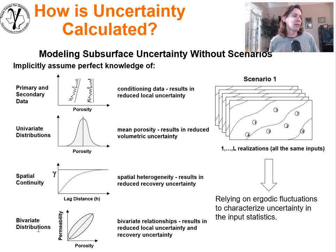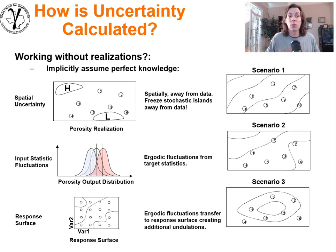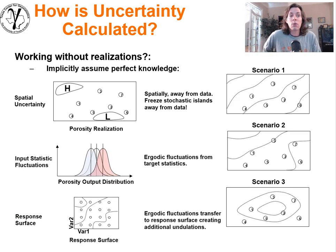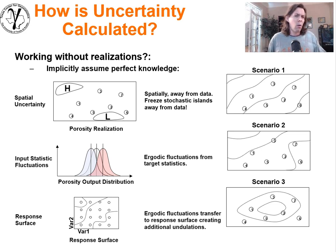If you don't use multiple scenarios, you're relying on ergodic fluctuations to characterize uncertainty in the input statistics — that was the old approach. We're in the modern age now and that's just not sufficient. So we must use multiple scenarios, and people have generally gotten that message.